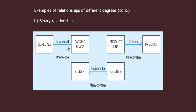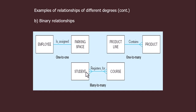Here we can see different cardinalities. One-to-one: one particular space is assigned to one employee, or for each employee there is only one particular parking space assigned. In one product line there is the possibility of many products — minimum one product and the possibility that there can be many products inside one product line. Similarly, one student can register in many courses, or in one course there can be many students.